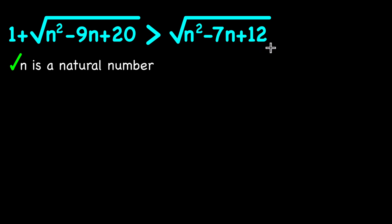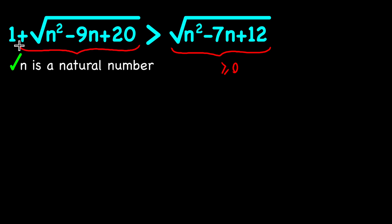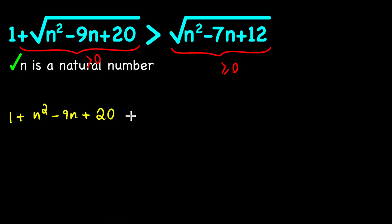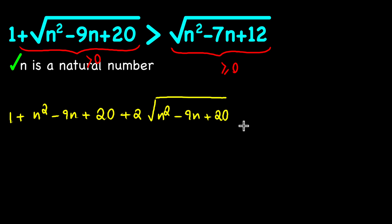First of all, notice that the right hand side of this inequality is something non-negative and the left hand side is completely positive, therefore we can go ahead and square both sides. If we do that, we will have 1 plus n squared minus 9n plus 20 plus 2 times the square root of n squared minus 9n plus 20, and this is greater than n squared minus 7n plus 12.